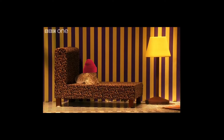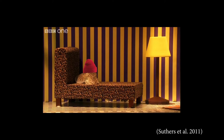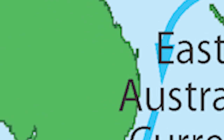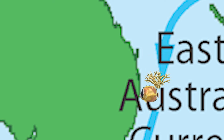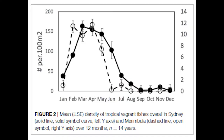In order to explore tropicalisation along western boundary currents, we must distinguish the difference between tropical vagrancy and tropicalisation. Due to the properties of western boundary currents, they are very good at transporting marine larvae from the tropics towards the subtropics. Because marine organisms are highly adapted to specific water temperatures, tropical larvae carried by western boundary currents are only able to settle in temperate waters during summer periods.